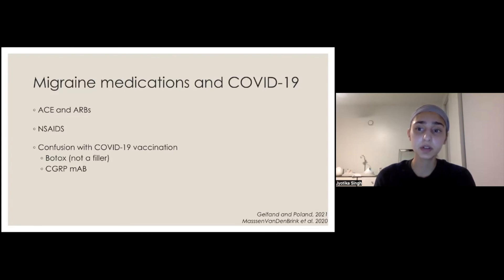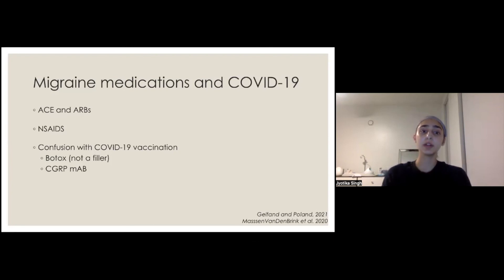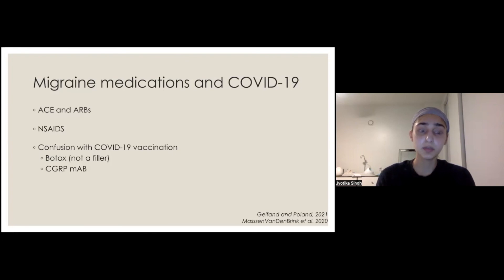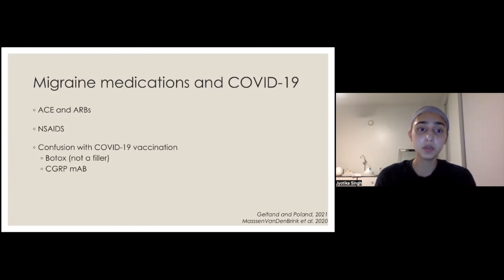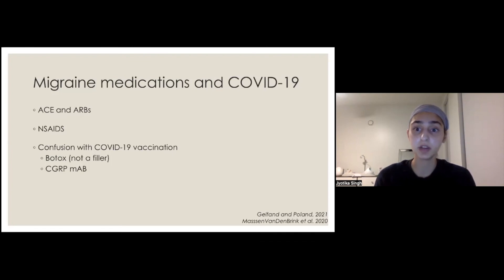Similarly, another medication group told to be avoided early in the pandemic were NSAIDs — medications like ibuprofen and naproxen. Some doctors or articles suggested they should be avoided, but if you use these for migraine, you can continue to use them. Even if you have a COVID-19 infection, there's not enough research to show that using these medications makes your infection worse.